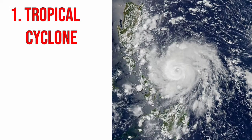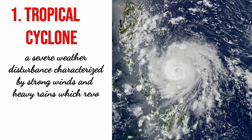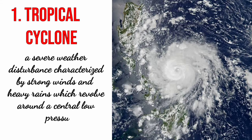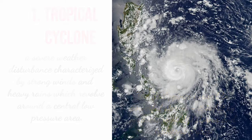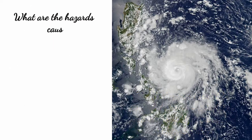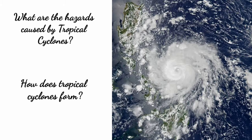A tropical cyclone is a severe weather disturbance characterized by strong winds and heavy rain storms, which revolve around a central low pressure area. The Philippines is used to powerful storms — it is hit by an average of 20 storms and typhoons a year. Now, what are the hazards caused by tropical cyclones and how does it form?